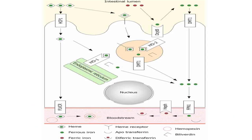For the absorption of iron, humans get iron in one of two forms: heme iron and non-heme iron. Each form has its own way of absorption. The absorption of heme iron is much easier than non-heme iron because non-heme iron absorption goes through many difficulties.